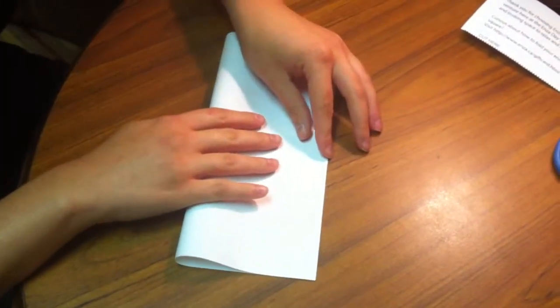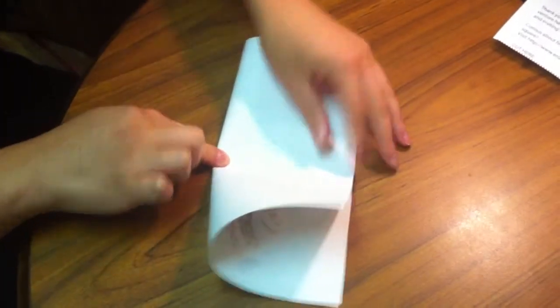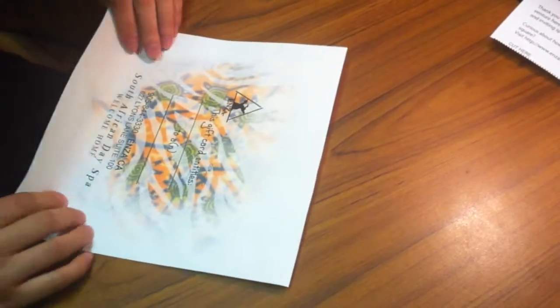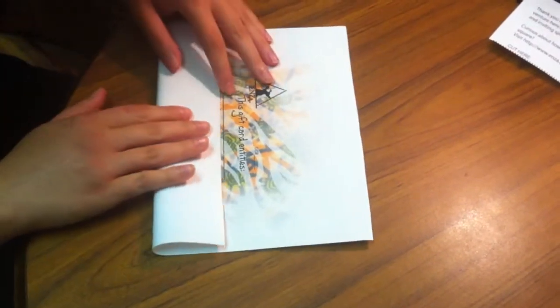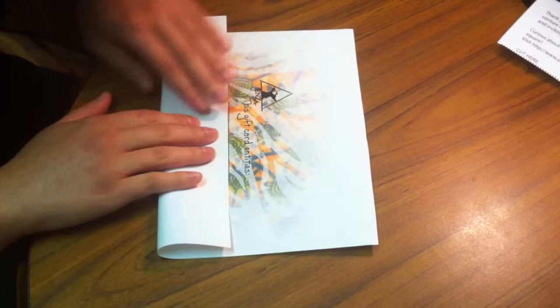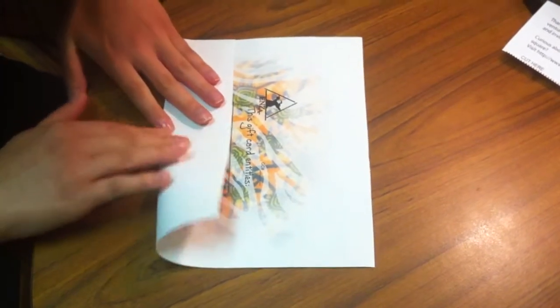Now fold the paper in half horizontally. You can either fold this completely or just mark the space so that you don't get a firm line. Take the bottom half and fold it up to meet that center line, running your finger along the crease.